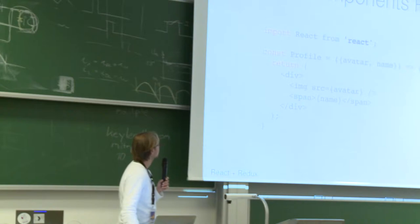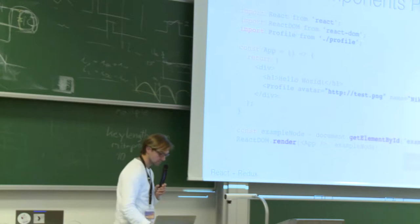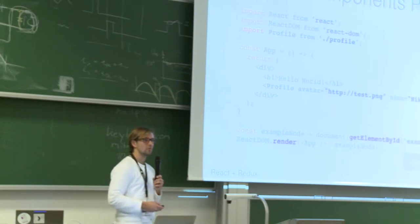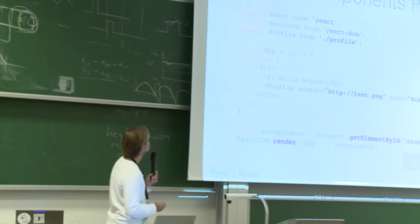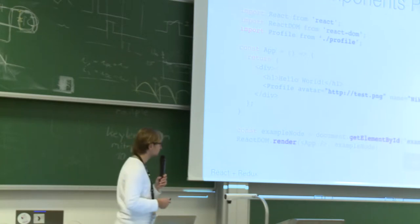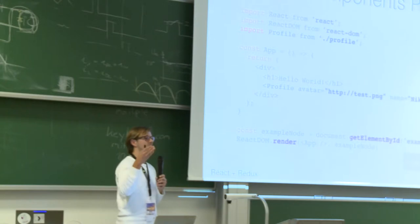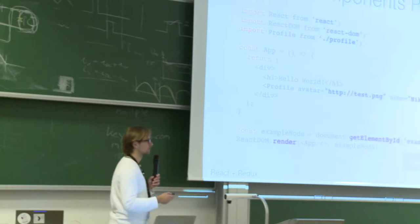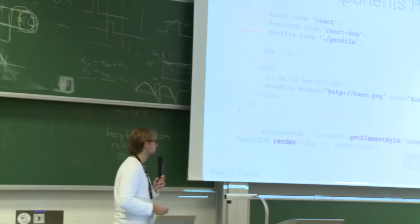What we did is create our first profile component, which takes parameters — avatar and name — as properties. We can use these in our JSX code. Then we can do nesting: create our own components and use them in our HTML. That's pretty neat, because you can create your own application structure and simply nest things as you want. You have a page, in the page you have a header, the header takes parameters like navigation links — this makes it really composable.